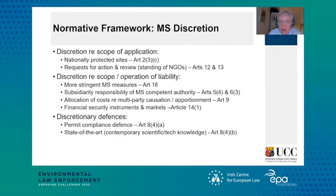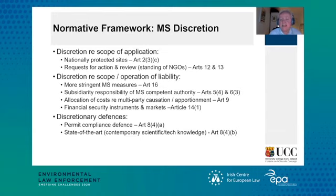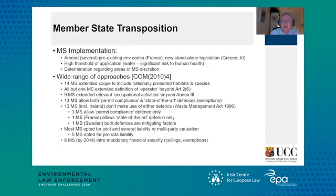Most importantly, however, are the discretionary defences. Member states can opt to include a permit compliance defence under Annex B, or a state-of-the-art defence having regard to the state of technical knowledge and understanding, also under Annex B. As a harmonizing measure, this really doesn't stack up.